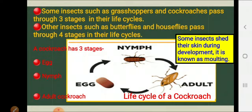Some insects such as grasshoppers and cockroaches pass through stages in their life cycle. The life cycle is the sequence of development that takes place in an animal from the egg to the adult stage. Some insects have three stages in their life cycle and some have four stages.